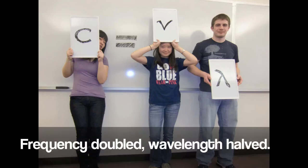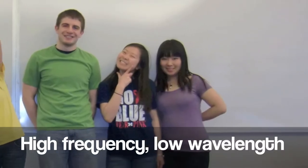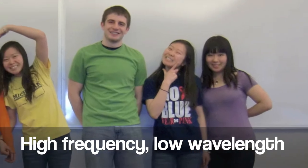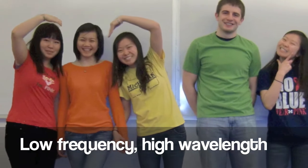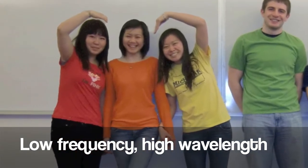When frequency is doubled, wavelength is halved. At one end of the visible spectrum is high frequency and low wavelength, such as violet light. At the other end is low frequency and high wavelength, such as red light.